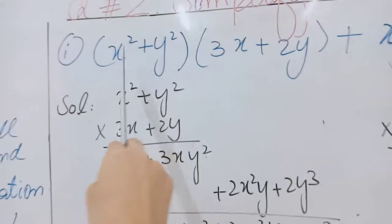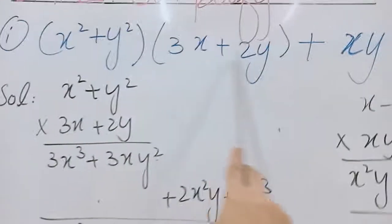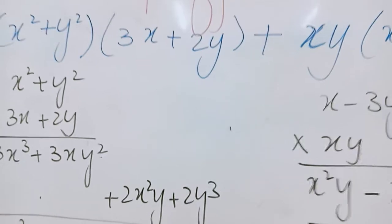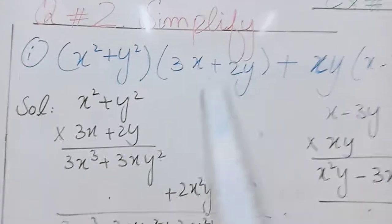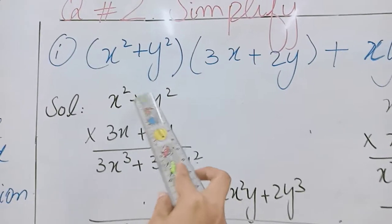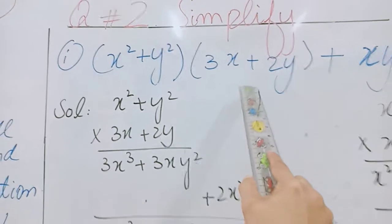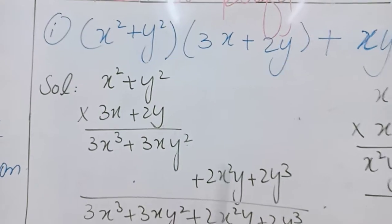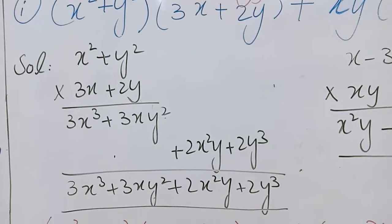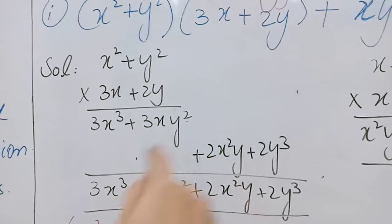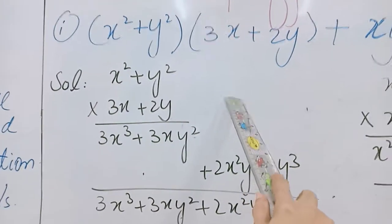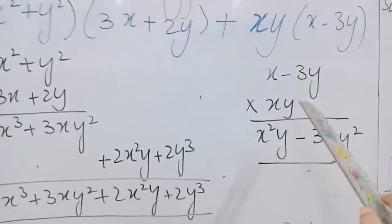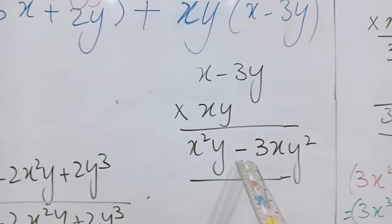In first part, this question has two parts. This is first part and this is second part separated by plus sign. How to multiply? So we first try to do the multiplication of these two values as you have done in the previous lecture. Then we multiply these two values like this.